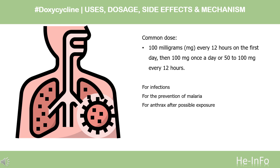Children up to 8 years of age: use is not recommended for malaria prevention. For anthrax after possible exposure, adults and children weighing 45 kg or more take 100 mg 2 times a day, every 12 hours, for 60 days. Children weighing less than 45 kg: dose is based on body weight and determined by the doctor, usually 2.2 mg per kg 2 times a day for 60 days.